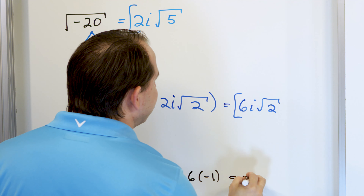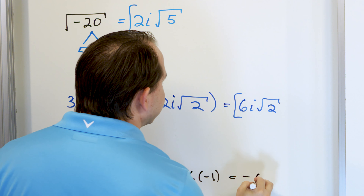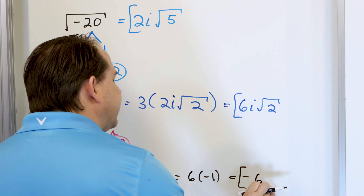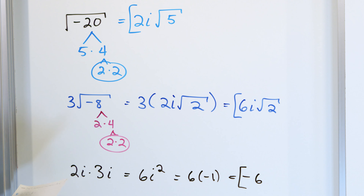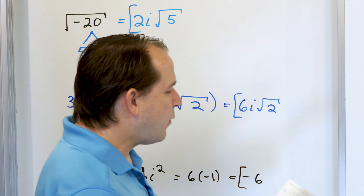Working with imaginary numbers is actually not hard at all, as I'm trying to show here. Now we'll switch gears from taking the square root of negative numbers to what happens when we start multiplying these imaginary numbers together.